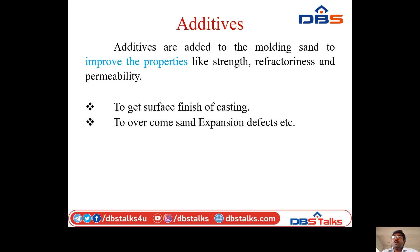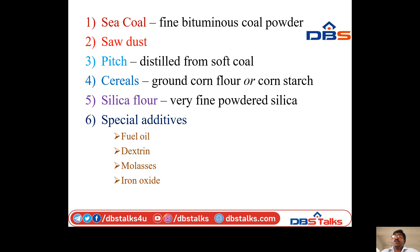Additives are added to moulding sand to improve properties like strength, refractoriness, and permeability; to get a good surface finish on the casting; and to overcome expansion defects. Common additives include: sea coal (fine bituminous coal powder), pitch (distilled from soft coal), cereals (ground cornflour or cornstarch), silica flour (very fine powdered silica). Special additives include fuel oil, molasses, and iron oxide.